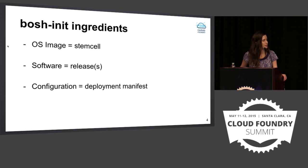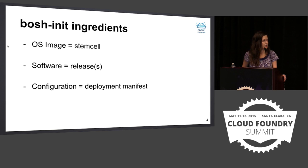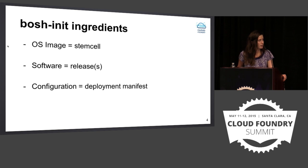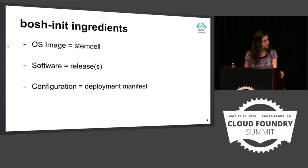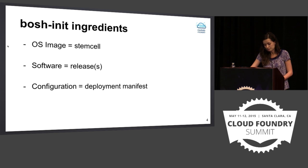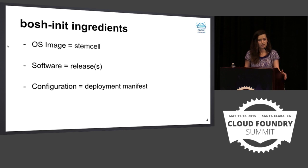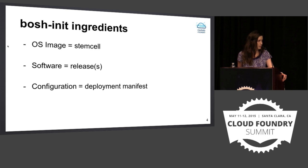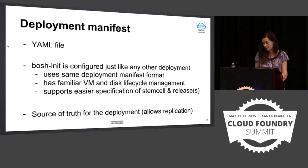CPI is packaged as a release and the first thing BOSH init does is install the CPI locally, then use the CPI to create resources in infrastructure. After VM and disks are created, it configures those VMs as specified in the deploy manifest. We'll take a look at the deploy manifest a little bit later in more detail. Let's take a look at what are the main components of BOSH init.